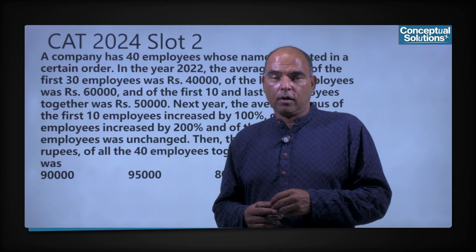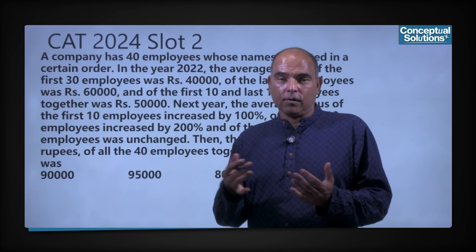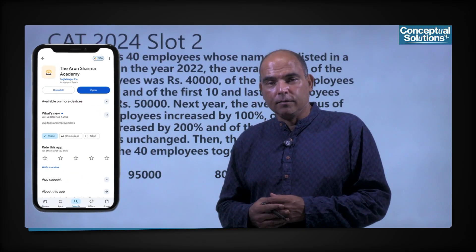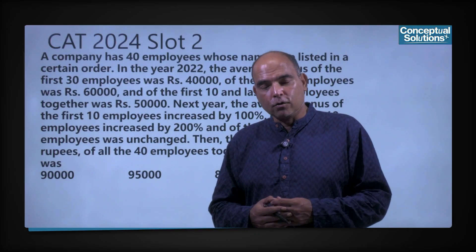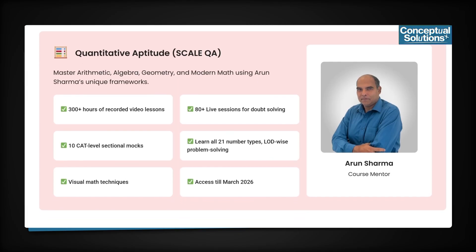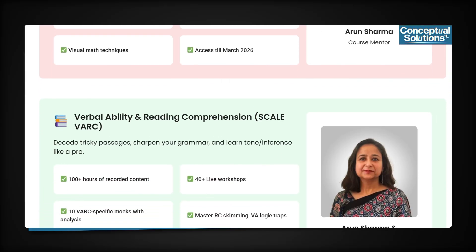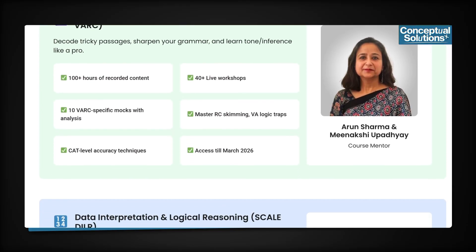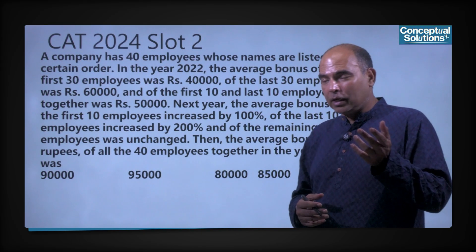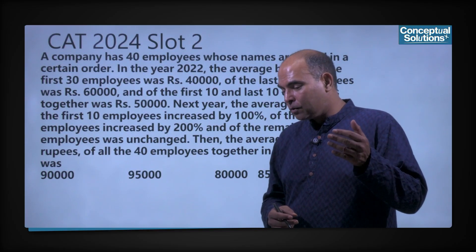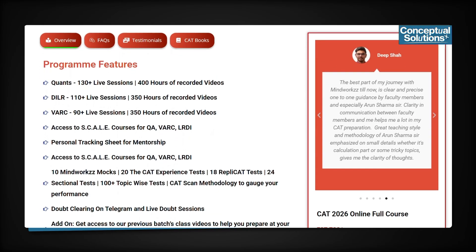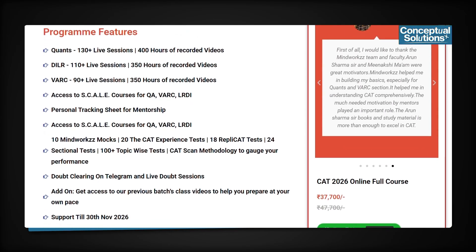For more content and for real-time courses, both recorded as well as live, you can visit Arun Sharma Academy app, download it and start with some of the courses. There is a lot of free content also on the app. We have individual sectional courses called the SCALES programs covering Maths, Quants, DILR, and VRC, from school level all the way to CAT level. We also have upcoming courses for CAT 25 and CAT 26, including crash courses.